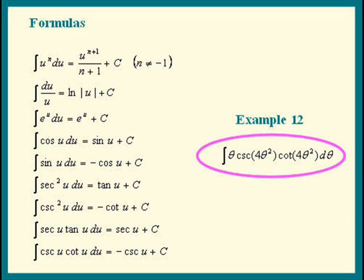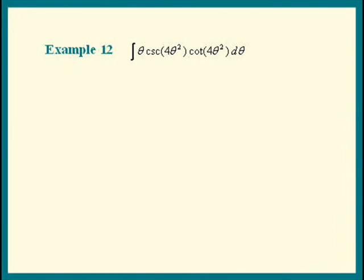I'm sure you all picked the integral of cosecant u cotangent u du equals negative cosecant u plus C. That means 4 theta squared had better be our u. So let's pick u to be 4 theta squared and see whether du shows up.